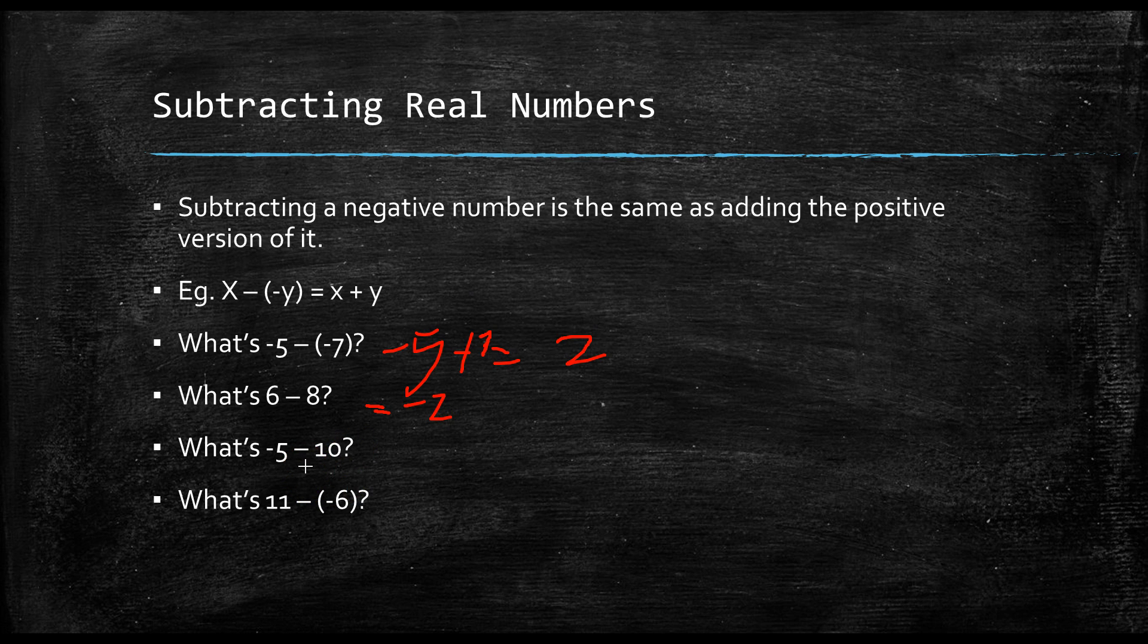What's negative 5 minus 10? This is subtracting a positive number. It's just a regular subtraction. Negative 5 minus 10 is equal to negative 15.